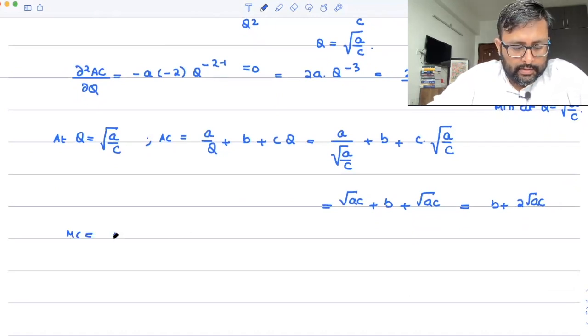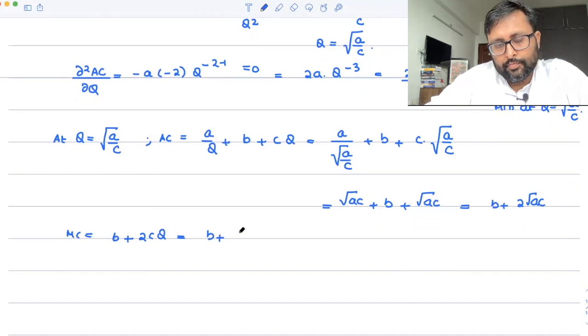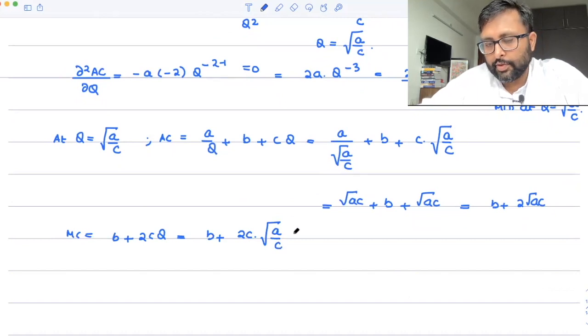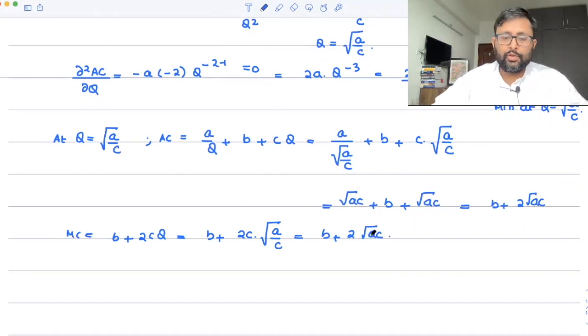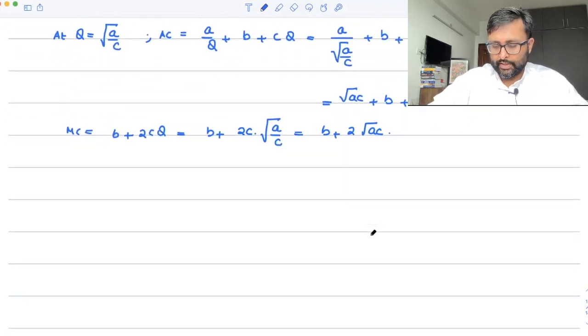Well, MC is b + 2cq. In place of q, you can write √(a/c). Like this: b + 2√(ac). b + 2√(ac).